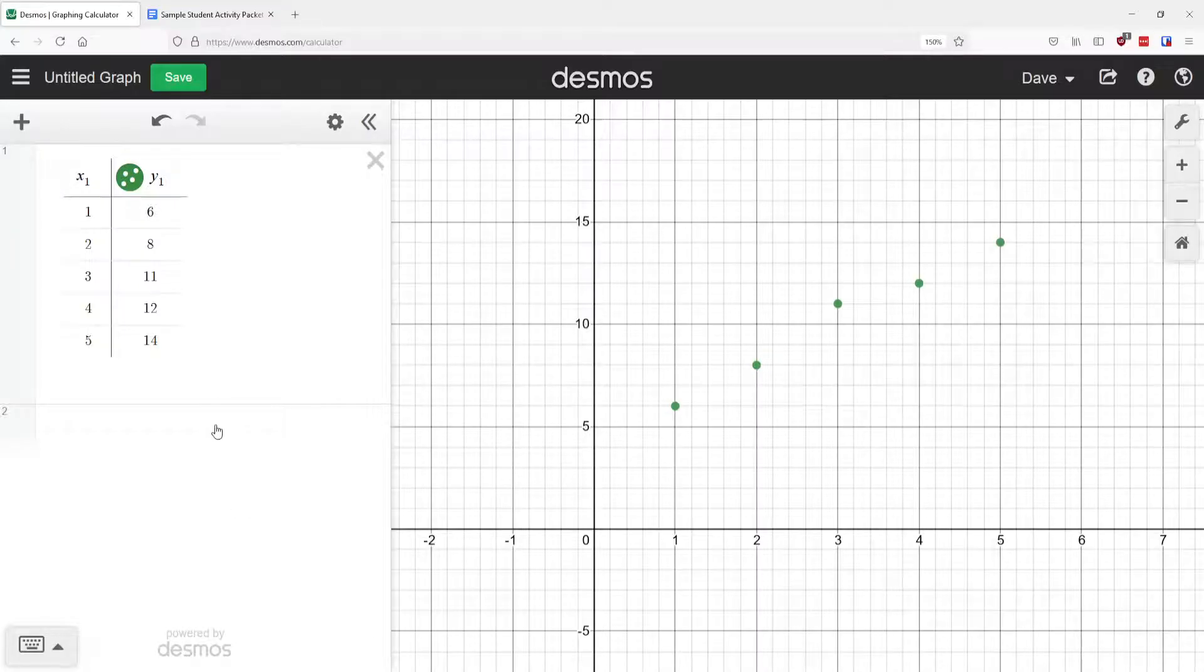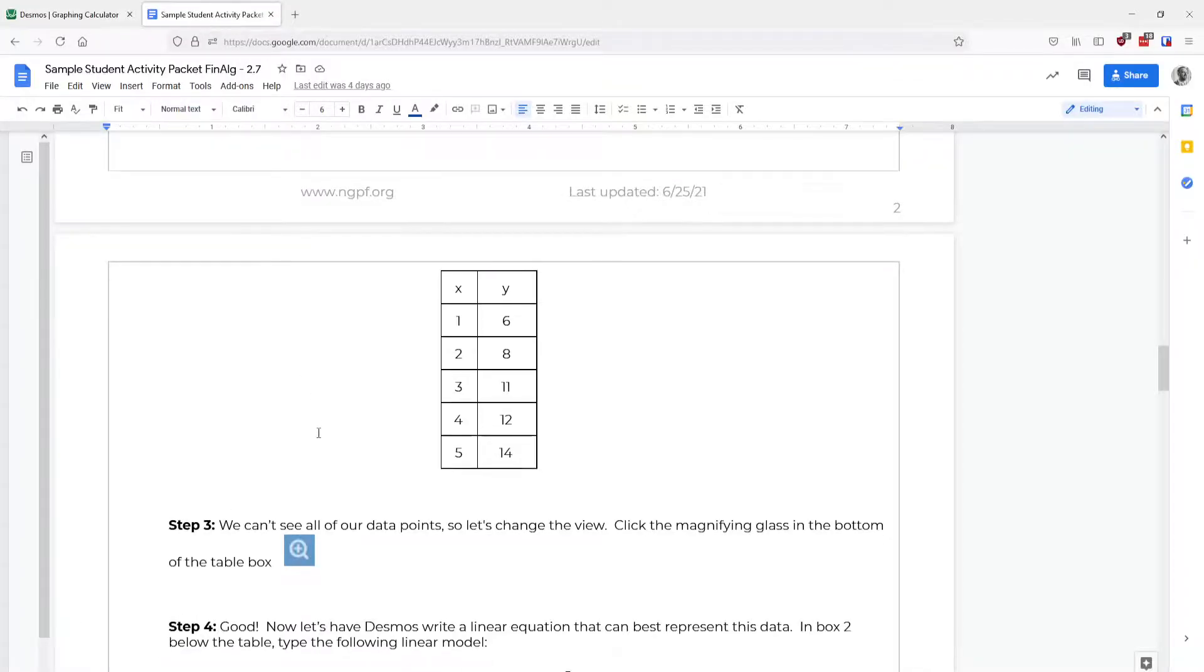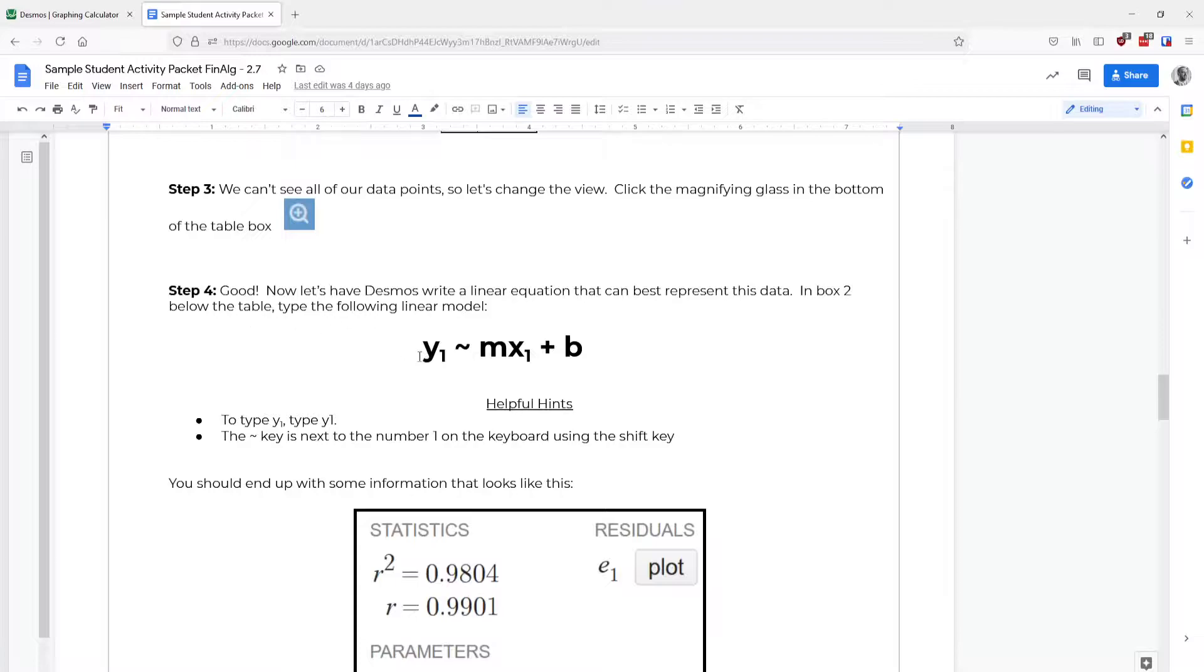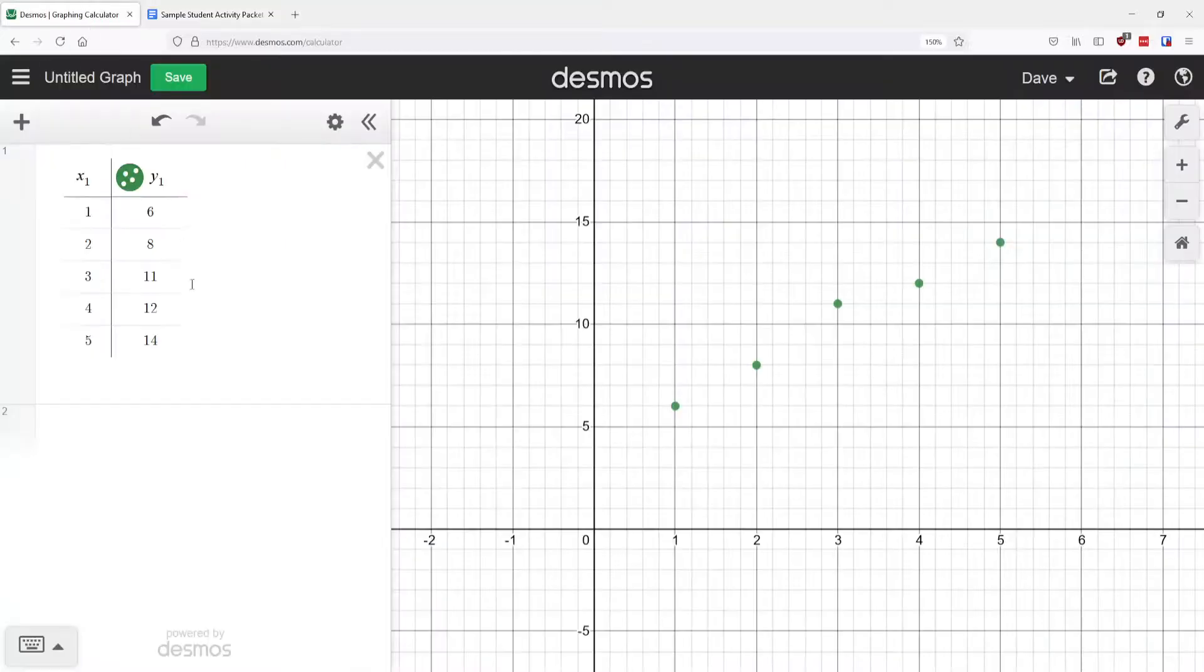And so the way we're going to use Desmos to find that is if we scroll down again, there's step four. There is a little equation that we're going to write in the next box below our table. And it's going to look like this.